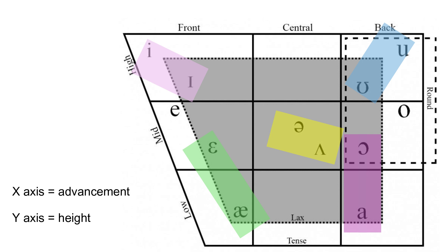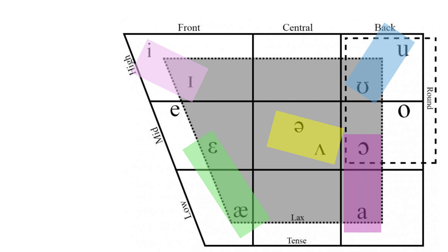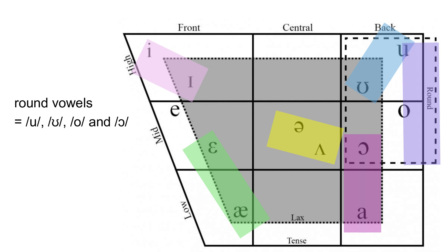In Standard American English, E and O do not occur as pure phonemes, but as part of diphthongs as in A and O. Also, the high and mid back vowels U, U, O, and AH are called round vowels since they are produced with the lips rounded.